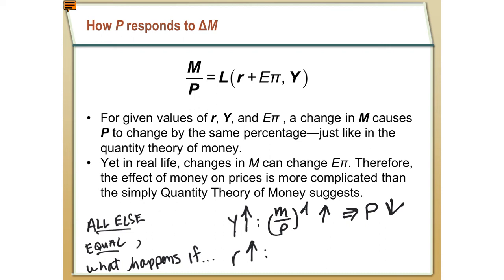What happens to R? If R goes up, the nominal interest rate is going to increase — since the nominal interest rate is R plus Eπ. What does this do to money demand? The nominal interest rate is the cost of holding money, so this makes money demand go down. The right-hand side is getting smaller, so the left-hand side needs to get smaller as well. For a given value of M, to make the left-hand side smaller, we need to make the denominator bigger — in other words, the price level must go up.